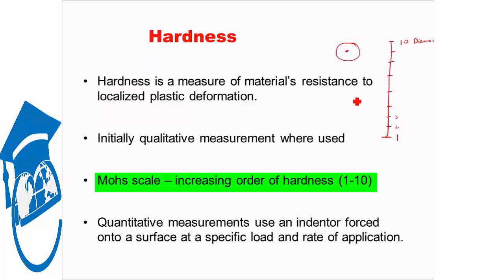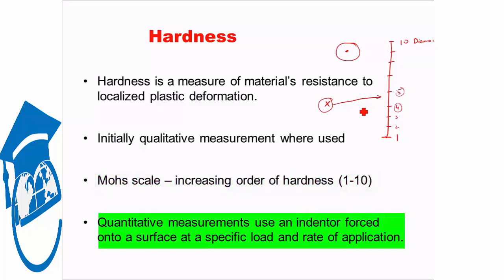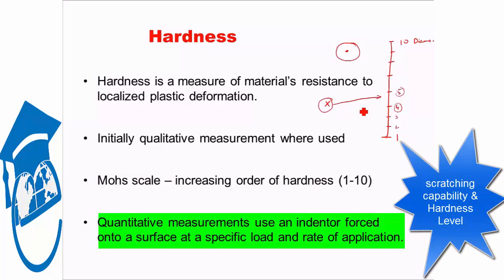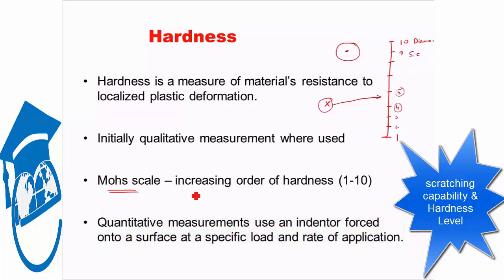Now suppose we took any material, let's say material X. And material X was found such that it scratched the surface of material 4, of material with hardness Mohs scale 4, but it was scratched by that of Mohs scale 5 hardness. That meant that material X had a hardness in Mohs scale between 4 and 5. So this was a qualitative measurement. You compare the scratching capability of two materials and say which one is harder.